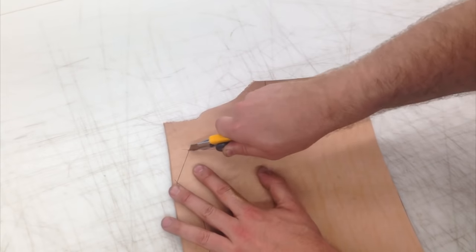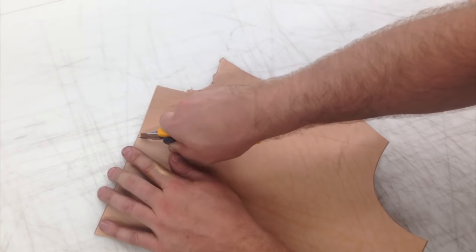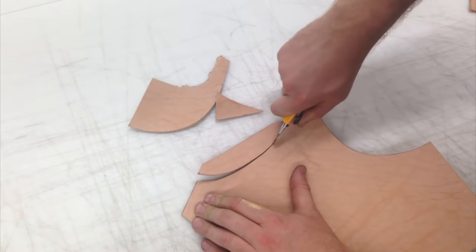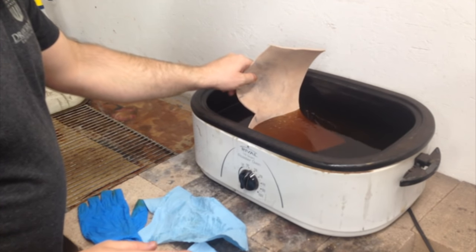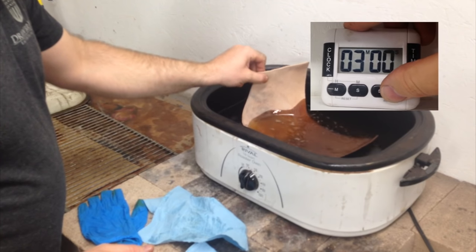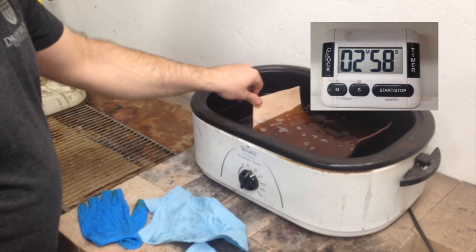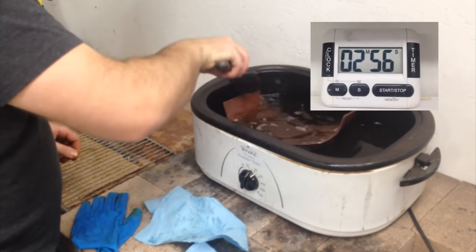I'm going to cut the backplate out of the same 8 to 9 ounce leather and I'm also going to wax harden this. Now that the front plate has sat overnight in front of a fan and is completely dry, I'm going to put it into hot melted paraffin wax.